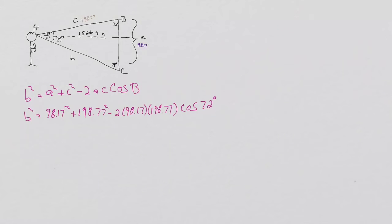From here, just put this in the calculator. Make sure you take the square root. And your side b is going to be approximately 192.58.